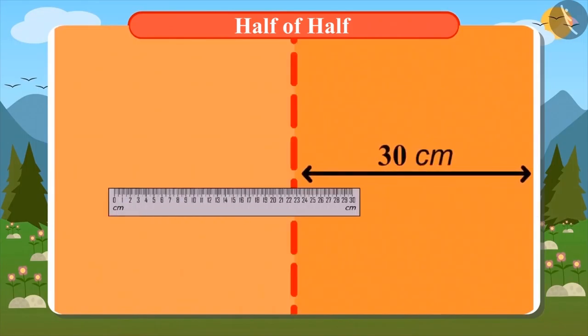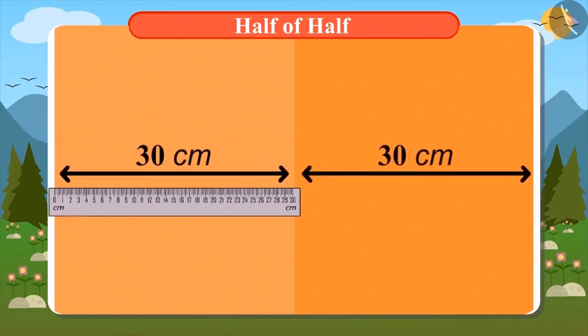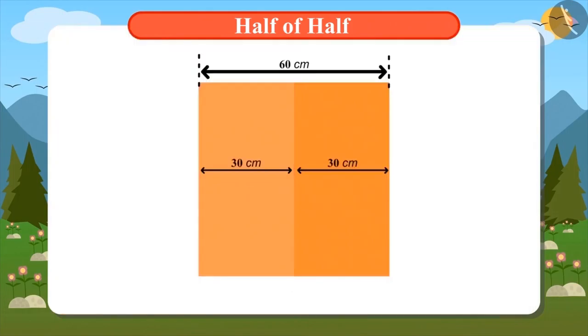Now, measure the distance from this line to the edges on both sides of the paper. By doing this, we came to know that the paper is now divided into two equal parts and each part is 30 centimeters. This paper is now divided into two halves. Yes.